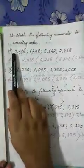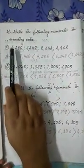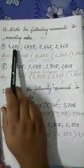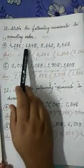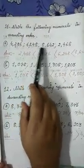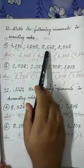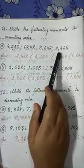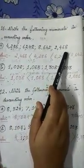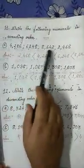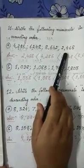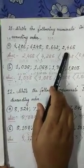Now we will do question number A. The numbers are 4286, 6248, 8642 and 2468. Among all the four numerals, we have to write the smallest numeral first.